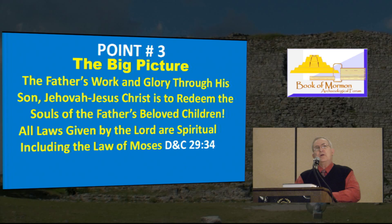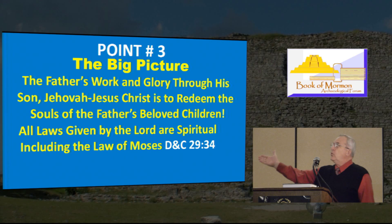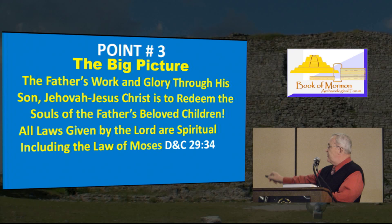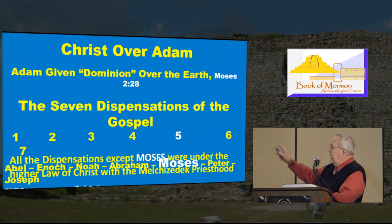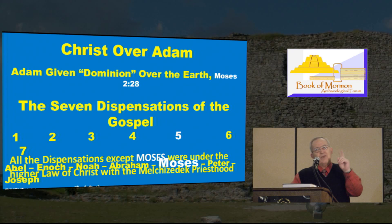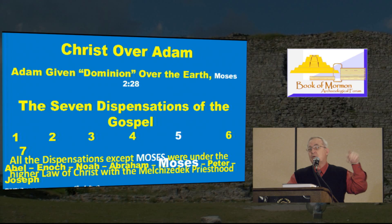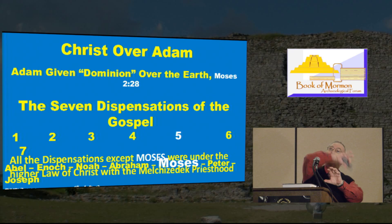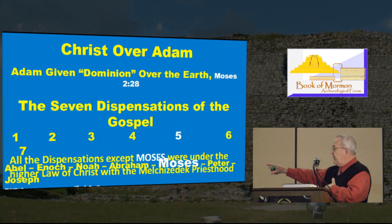The big picture: Heavenly Father's work and glory is to bring to pass the immortality and eternal life of His children. He assigns His Son, Jehovah-Christ, to be in charge of this earth, and Adam is assigned under Christ to be over the various dispensations of the gospel. All things given of God are spiritual — 'Never do I give a temporal commandment; all my commandments are spiritual,' the Lord says. We have Christ over Adam, and then the seven dispensations of the gospel. The first dispensation belongs to Abel — the Prophet Joseph said in Teachings page 169 that Abel is holding the keys of his dispensation. Abel, Enoch, Noah, Abraham, Moses, Peter, and Joseph Smith.